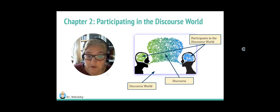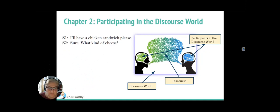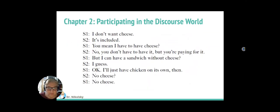Check out this example which Gavins brings. Again, she's speaker number one, S1. S1: I'll have a chicken sandwich please. S2: Sure. What kind of cheese? S1: No, a chicken sandwich. S2: Sure. What kind of cheese? S1: I don't want cheese. S2: It's included. S1: You mean I have to have cheese? S2: No, you don't have to have it, but you're paying for it. S1: But I can have a sandwich without cheese? S2: I guess. S1: Okay. I'll just have chicken on its own, then. S2: No cheese? S1: No cheese. S2: No cheese.